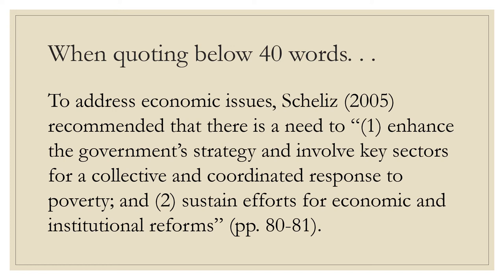When quoting below 40 words, this is how it would appear: To address economic issues, Shelly's (2005) recommended that there is a need to, first, enhance the government strategy and involve key sectors for a collective and coordinated response to poverty, and number two, sustain efforts for economic and institutional reforms (p. [page number]). Always add the period at the last part of the sentence. To remember how to use direct quotation: you can start with the author's name and the year of publication plus the idea.